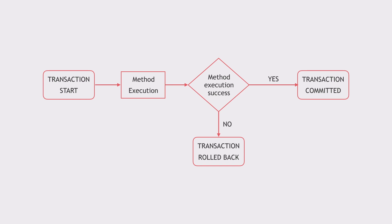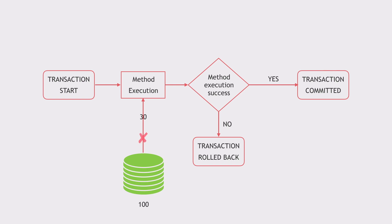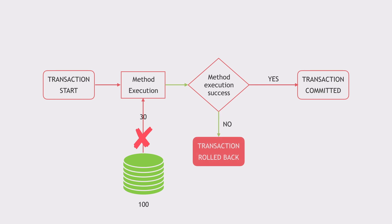For example, let's say there were 100 comments in the database and while this method is being executed, 30 of them were successfully streamed. But then something happens in the middle of it and it could not read from the database anymore. Since this method runs within a transaction, the whole method will fail instead of returning 30 comments. And that prevents us from getting an incomplete list of comments.